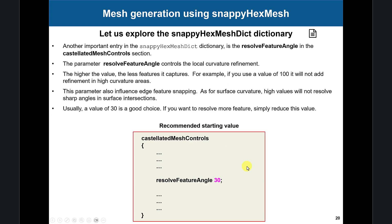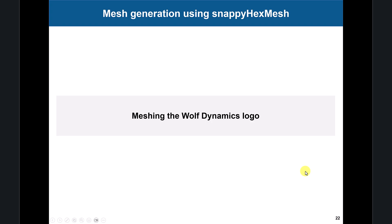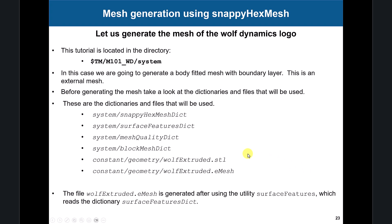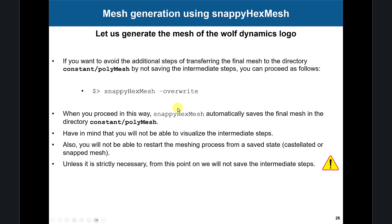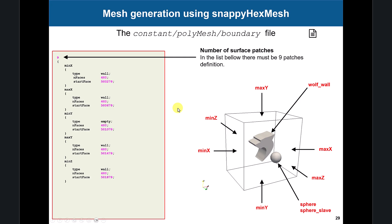This is the Wolf Dynamics logo. Look at how all the files are set up: SnappyHexMesh, where you set up everything; SurfaceFeatureExtract, where you capture sharp angles; mesh quality in a different file (though you can put it here); blockMesh to generate the background mesh; your STL; and your sharp angles. We're going to work on that. This is the basic workflow for mesh generation in OpenFOAM.